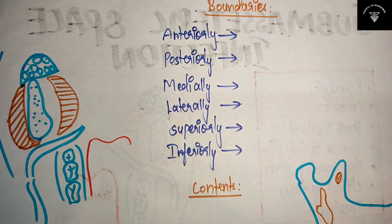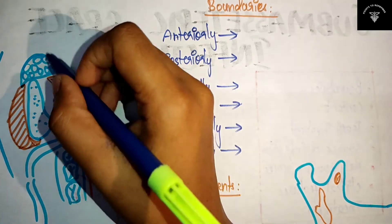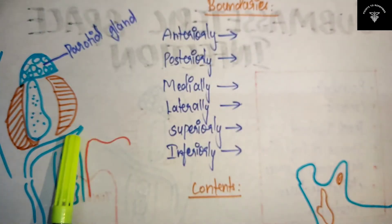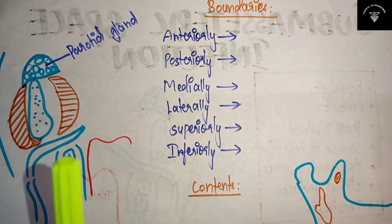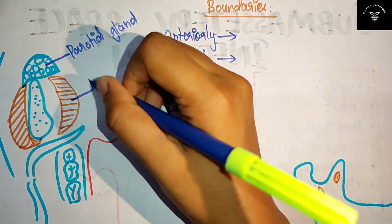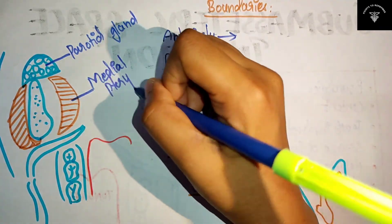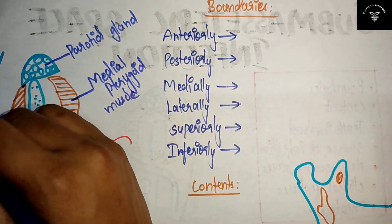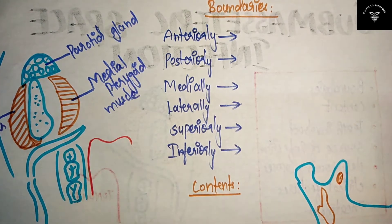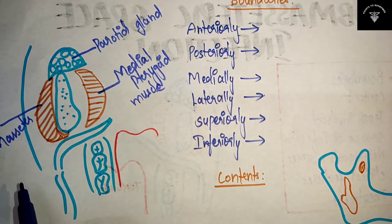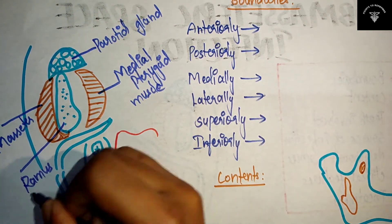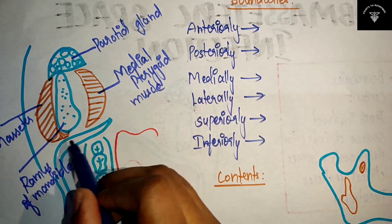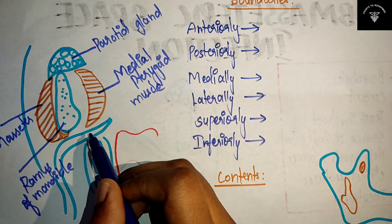Coming to the boundaries of submasseteric space — have a look at this diagram. This will be your parotid gland. The same diagram you saw for the pterygomandibular space infection as well, so it will be easy for you. This will be the medial pterygoid muscle, this will be your masseter muscle, and this is the ramus of mandible. And this will be your pterygomandibular raphe.